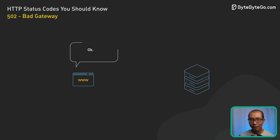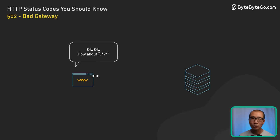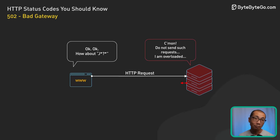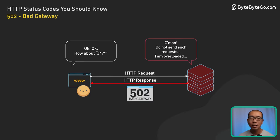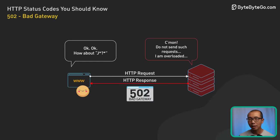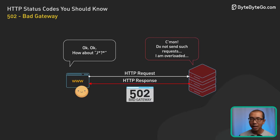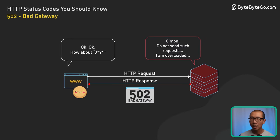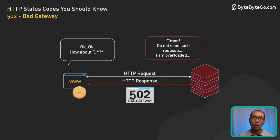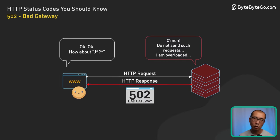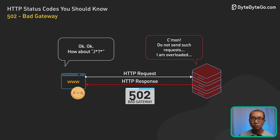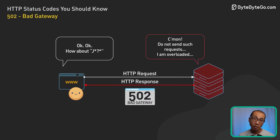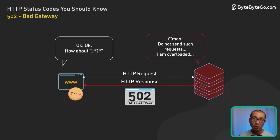502 Bad Gateway hints at issues between servers, like a proxy failing to get a response. Imagine you're using Nginx as a reverse proxy and it can't get a valid response from the application server — it would respond with a 502. This could be due to server overloads, network glitches, or misconfigurations.